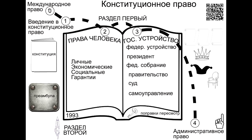Structurally, it consists of a preamble and Section 1, the body of the constitution, including nine chapters: fundamentals of the constitutional system; human and civil rights and freedoms; federal structure; president of the Russian Federation; federal assembly; government of the Russian Federation; judicial power and prosecutor's office; local self-government; and constitutional amendment and revision of the constitution. Section 2 provides transitional provisions. The provisions of chapters 1, 2 and 9 can only be reviewed by a constitutional assembly convened in accordance with a federal constitutional law.